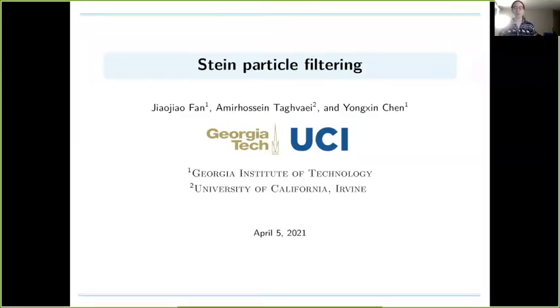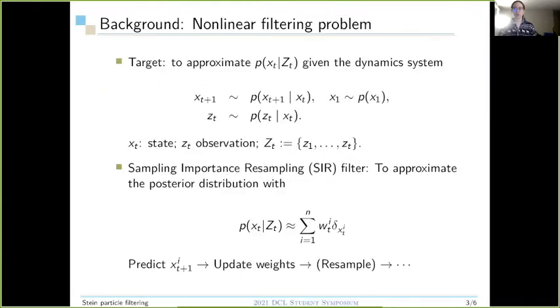Hello everyone. In this video, we are presenting Stein particle filtering. We aim to solve nonlinear filtering problems. Xt is the unknown hidden state. We can get access to the observation Zt. Capital Zt is all observations until time t. Our target is to estimate the hidden state Xt given all the observation history Z1 to Zt, which is formally P(Xt | Zt).